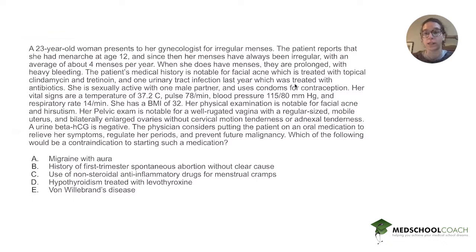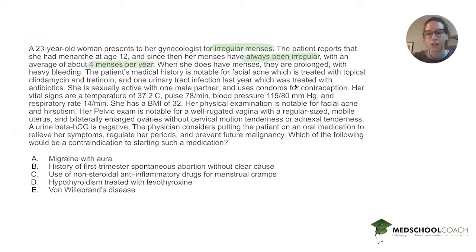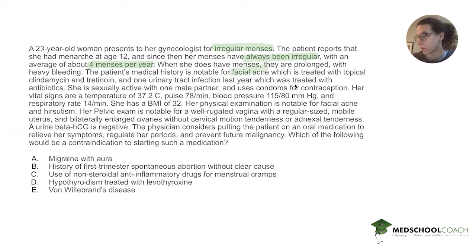There are some hints about what condition she has. She has irregular menses that have always been irregular — an average of about four menses per year. That's oligomenorrhea; she's bleeding about every three months. When she does have menses, they're prolonged with heavy bleeding. Her medical history is notable for facial acne, and importantly she has a BMI of 32, so she's obese. And again, she has facial acne and hirsutism — probably facial hair or darker body hair.